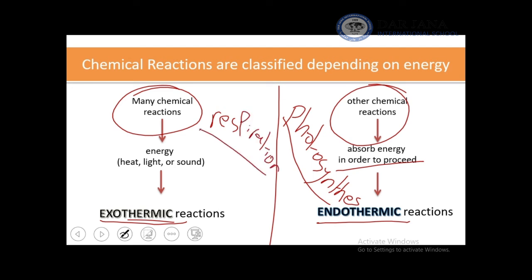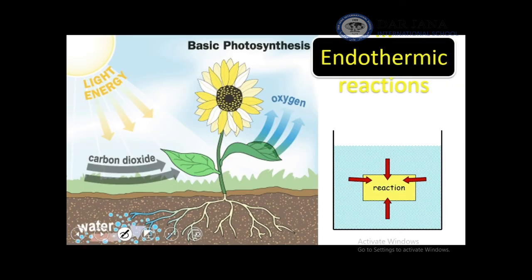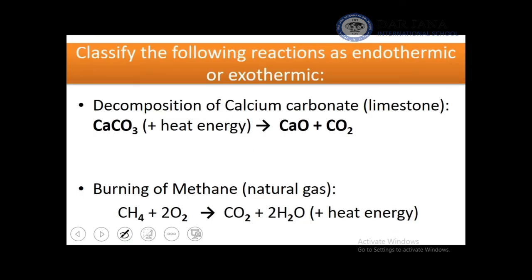Photosynthesis requires light energy to convert CO₂ and H₂O into glucose and oxygen gas — it is endothermic. Energy is typically measured in joules. To classify reactions: decomposition reactions require energy to break bonds, like breaking a big rock into smaller pieces — they are endothermic. The electrolysis of water and sodium chloride also require energy and are endothermic.